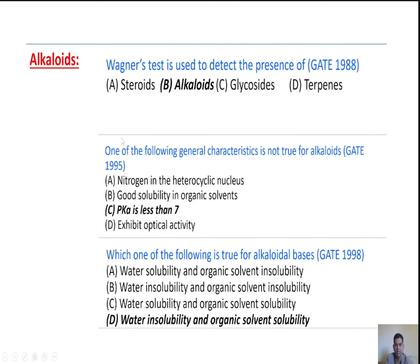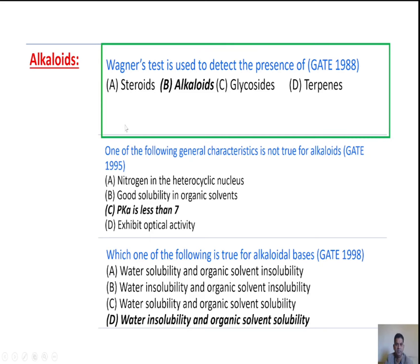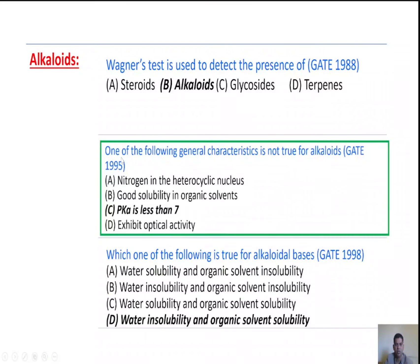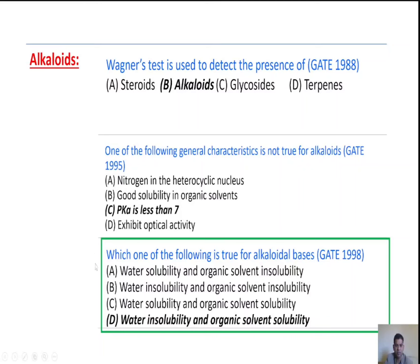Previously asked GPAT or GATE questions. First: Wagner's test is used to detect the presence of alkaloids. Second question: which general characteristic is not true for alkaloids? Nitrogen in heterocyclic nucleus — correct. Good solubility in organic solvents — correct. PKa less than 7 — wrong, as alkaloids have PKa more than 7. They exhibit optical activity — already studied. Third question: which is true for alkaloidal bases? Water insolubility and organic solvent solubility — answer is D, as alkaloidal bases are soluble in organic solvents but insoluble in water.